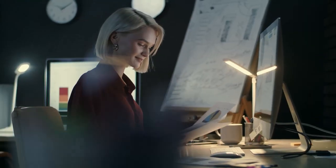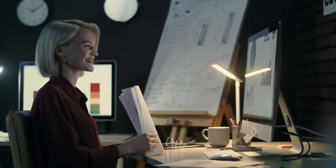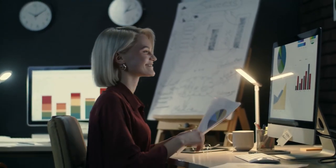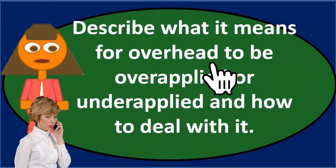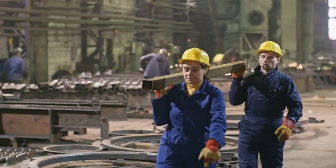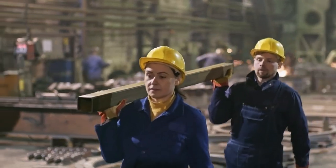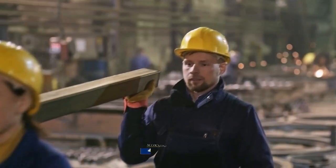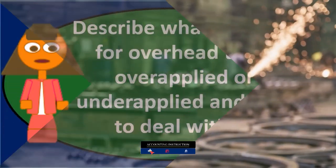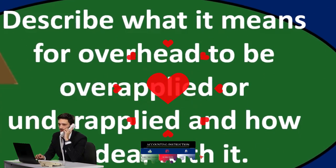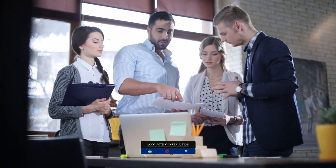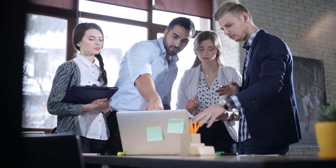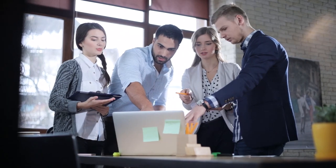When we think about overhead, we're typically thinking about a production company using a job cost or process cost system. It's possible to have overhead in a service company as well, but we'll typically think of a company that makes things. If we make things, there are three types of costs within production: direct labor, direct material, and overhead. Overhead is the tricky one because we can't apply it directly to a specific job in a job cost system, or to a specific process in a process cost system.